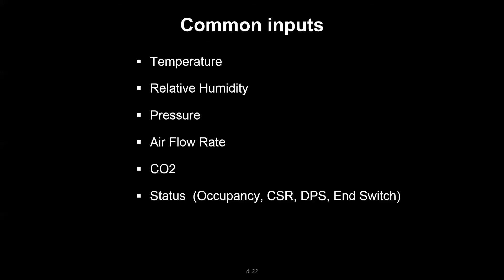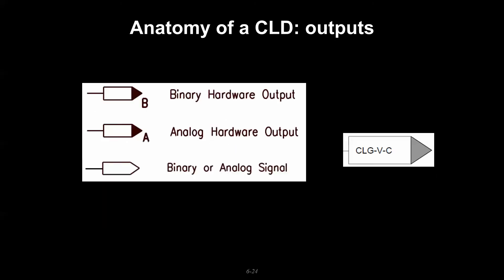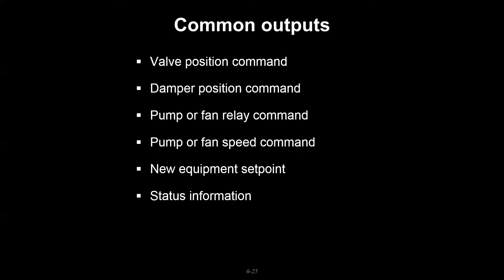Some common inputs there. On the output side you can see that same arrow shape, but here the directionality indicates it's leaving the control loop. Same convention where on the outside of this block you're going to see shading where it's going to an actual piece of equipment and whether or not that signal type is binary or analog.